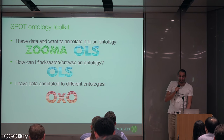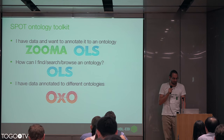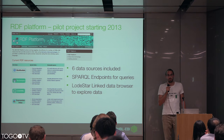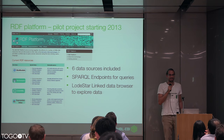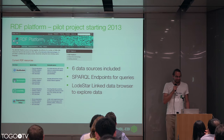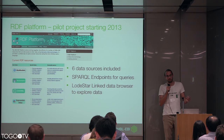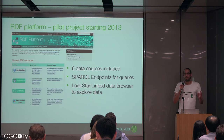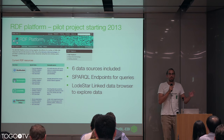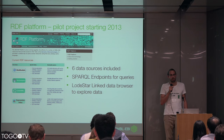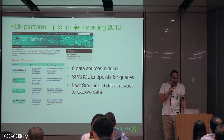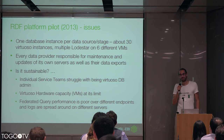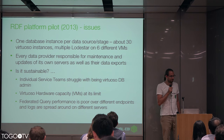Assuming you have annotated your data to ontologies and you have an RDF model, we can talk about the RDF platform. The EBI RDF platform was a pilot project that started in 2013. It started with six data sources, had a couple of SPARQL endpoints — one per data source — and also came with Lodstar, a linked data browser, that allows you to click on results and browse and explore the connections between them. Now the question is: what are the lessons learned from that pilot project?